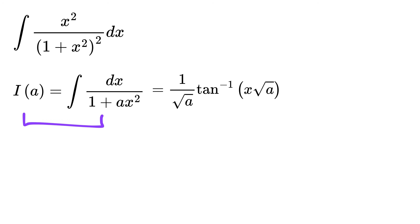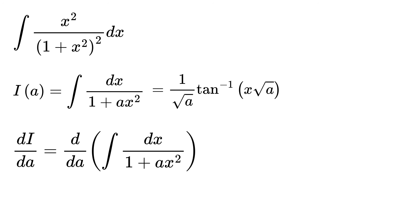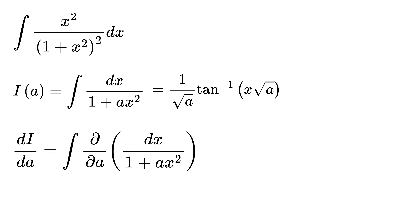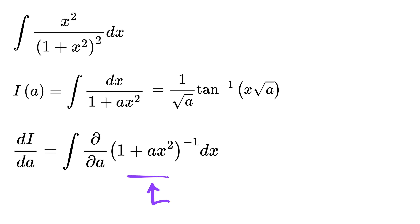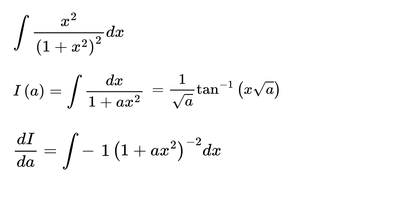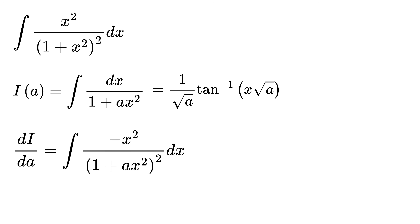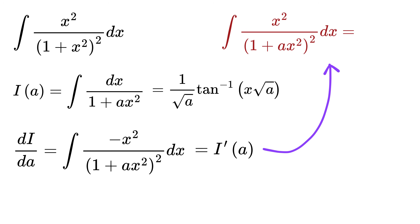Now here comes the magic. Let's differentiate both sides with respect to the parameter a. On the left-hand side, we get dI by da, which equals d by da of this integral. Now, for a continuous function, we can take the derivative inside the integral, and it will become the partial derivative of the integrand with respect to a. We can rewrite the integrand as (1 plus a times x squared) raised to minus 1. Using the power rule, we get minus (1 plus a times x squared) raised to minus 2, and then using the chain rule, we multiply by x squared, because x acts as a constant here since we are differentiating with respect to a. So we can rewrite it as: minus x squared over (1 plus a times x squared) whole squared equals I prime of a, or this integral equals minus I prime of a.